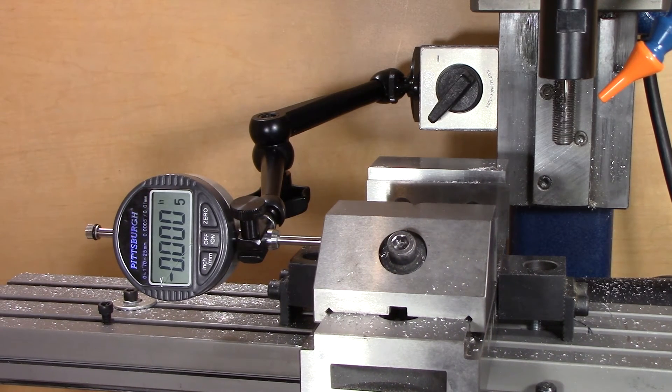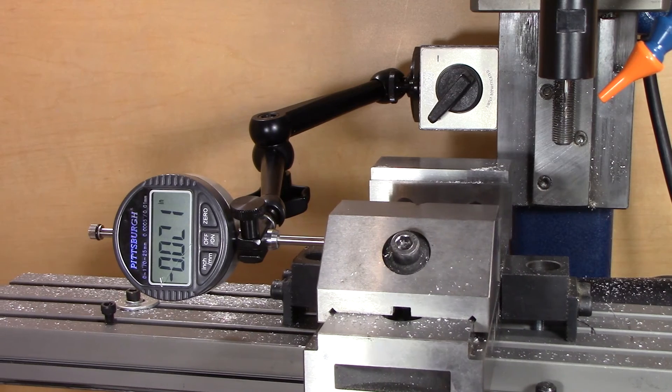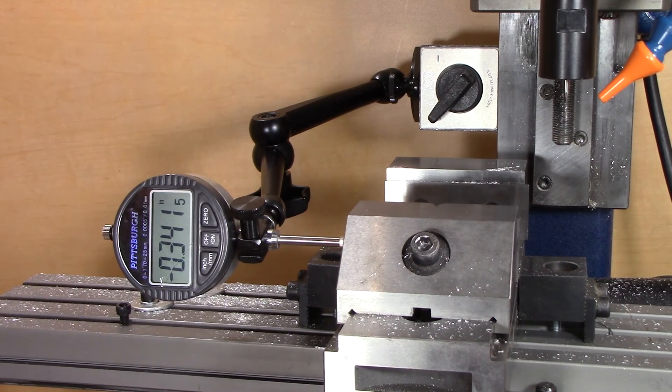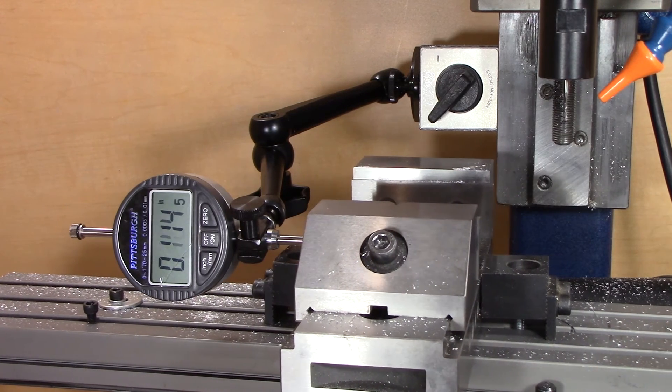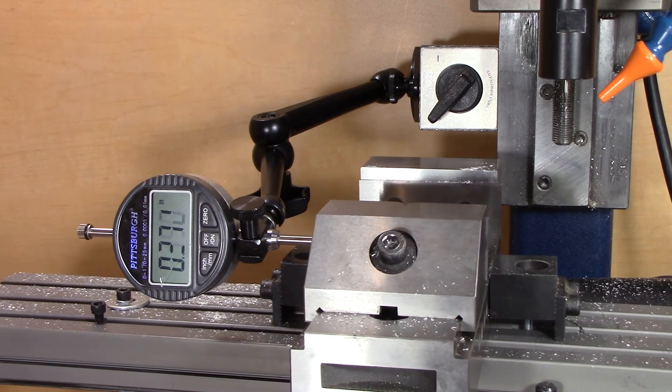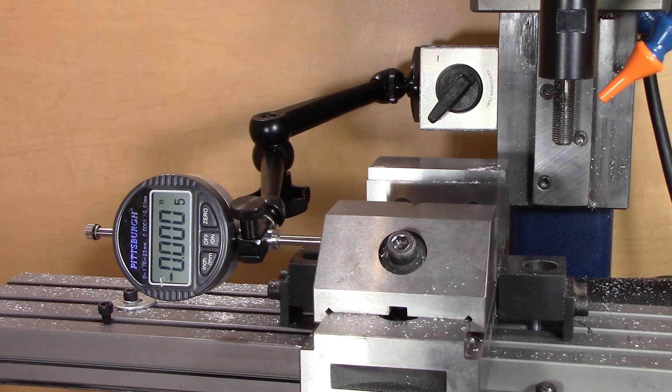So you can see now I can go either way, press go to zero, and it comes back to basically the same place. That means I've got it dialed in - I've taken care of the backlash. I'll do that for the other axes as well.